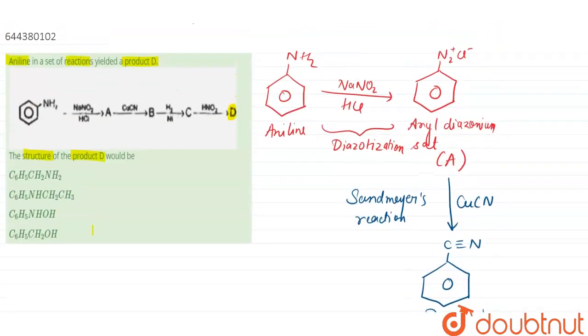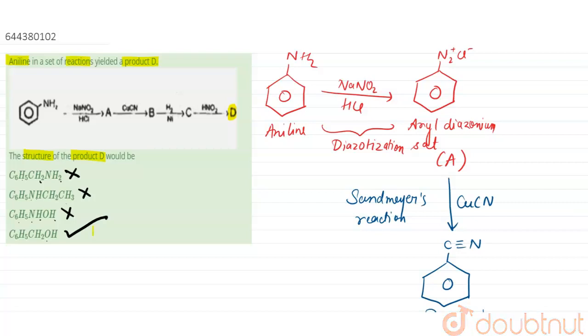Let us have a look at the options that have been given to us. Option number 1 is C6H5CH2NH2, this is our product C, so this is wrong. Next is C6H5NHCH2CH3, this is also wrong. Next is C6H5NHOH, no. C6H5CH2OH, this is the correct answer. So option number 4 is the correct answer. Thank you.